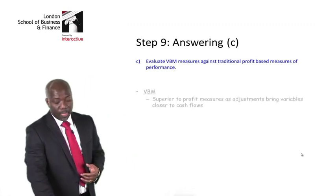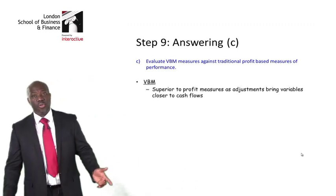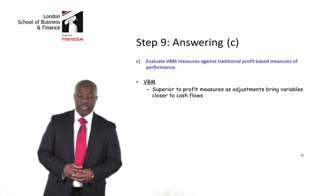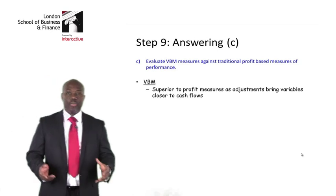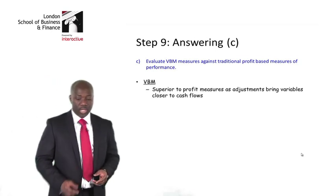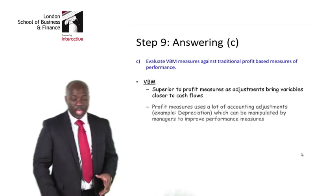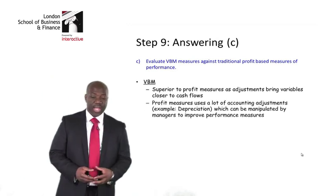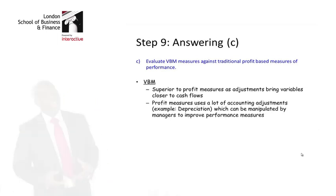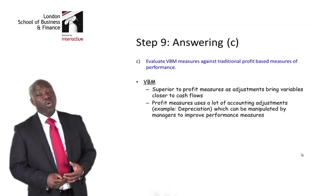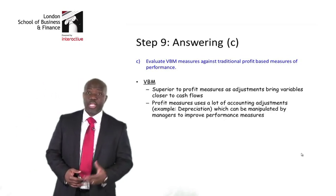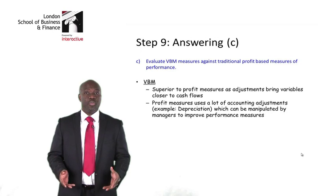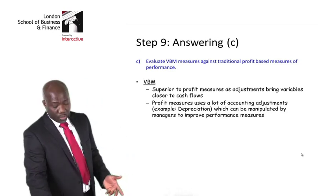What I did here is that I picked out VBM and some of their pros. VBM is more superior to profit measurements because of the adjustments. Adjustments actually move us very close to cash flows. Anytime we talk about profit measures, profit measures use a lot of accounting adjustments like depreciation and therefore can actually be manipulated, whereas VBM adjustments take us very close to cash flows and are therefore not easily manipulated.